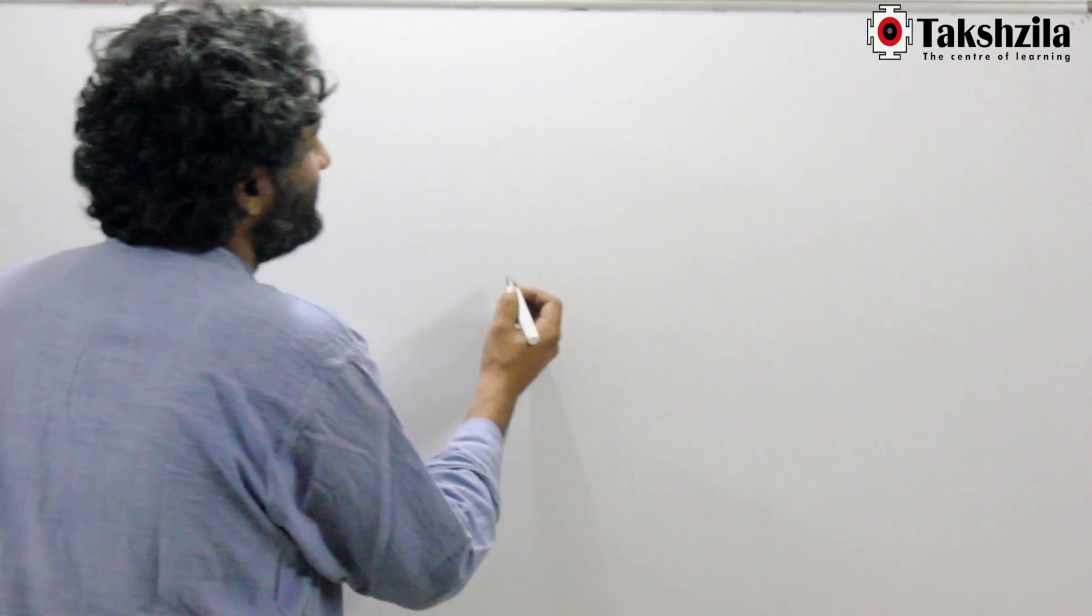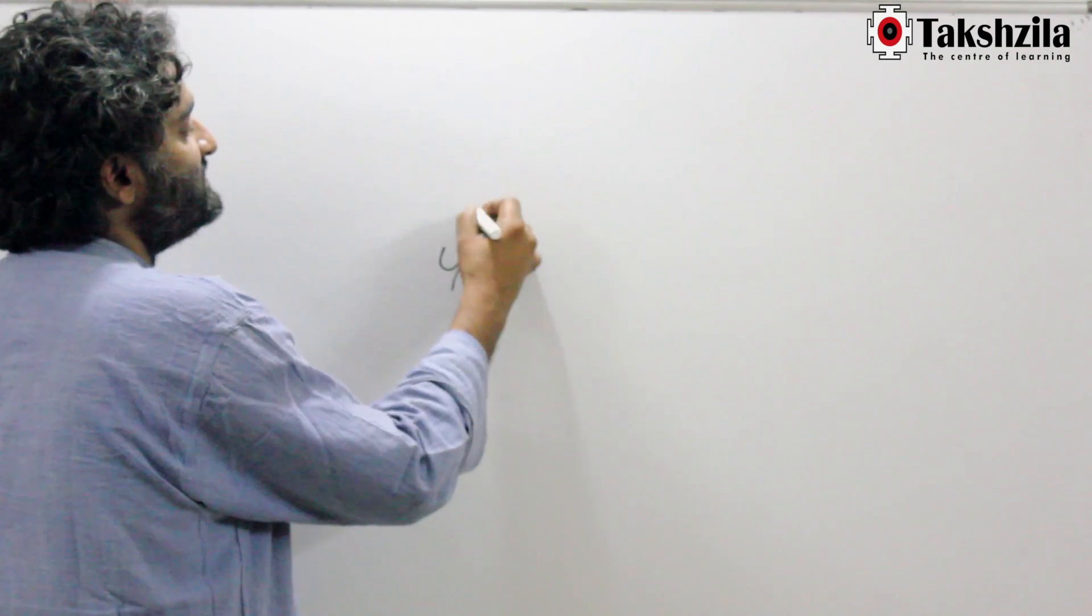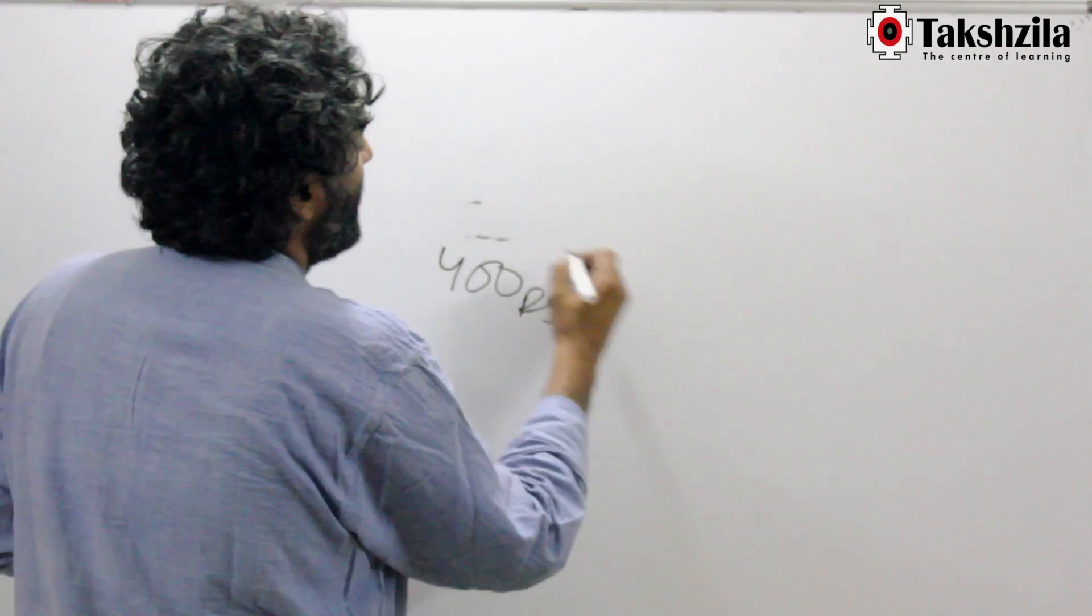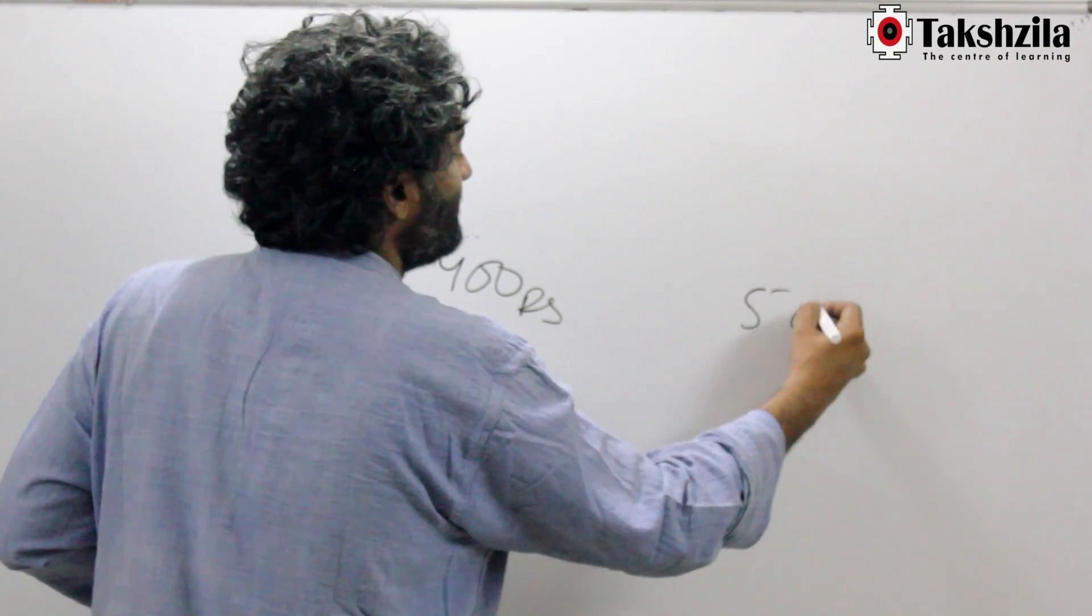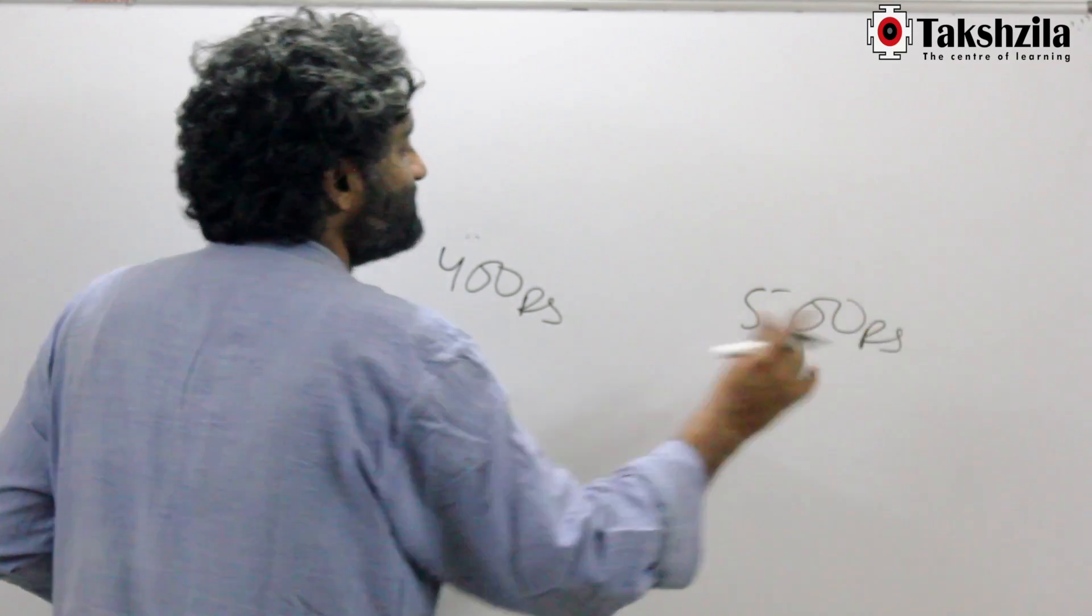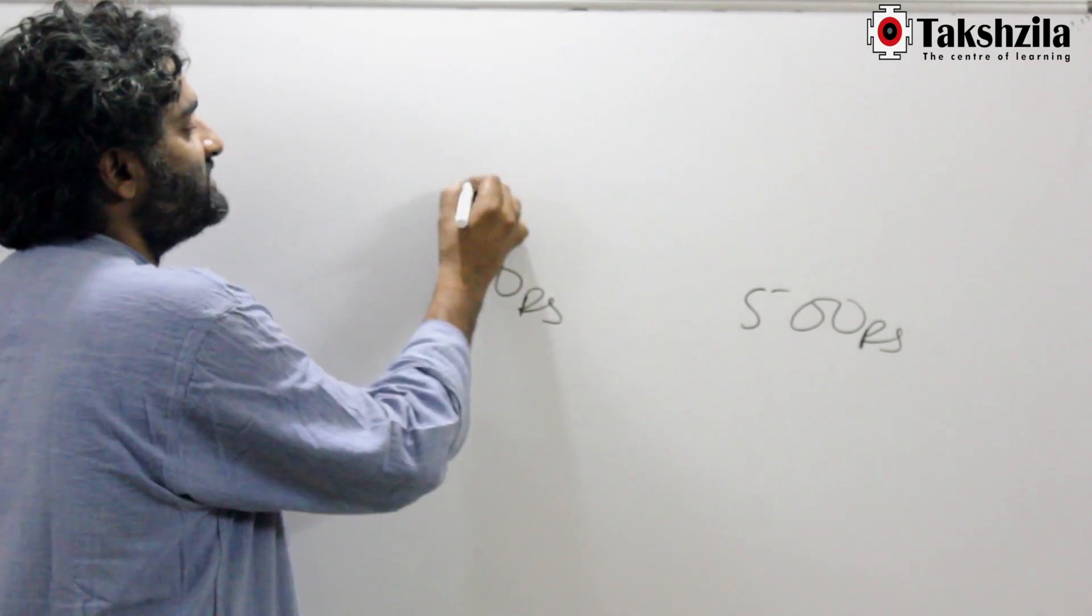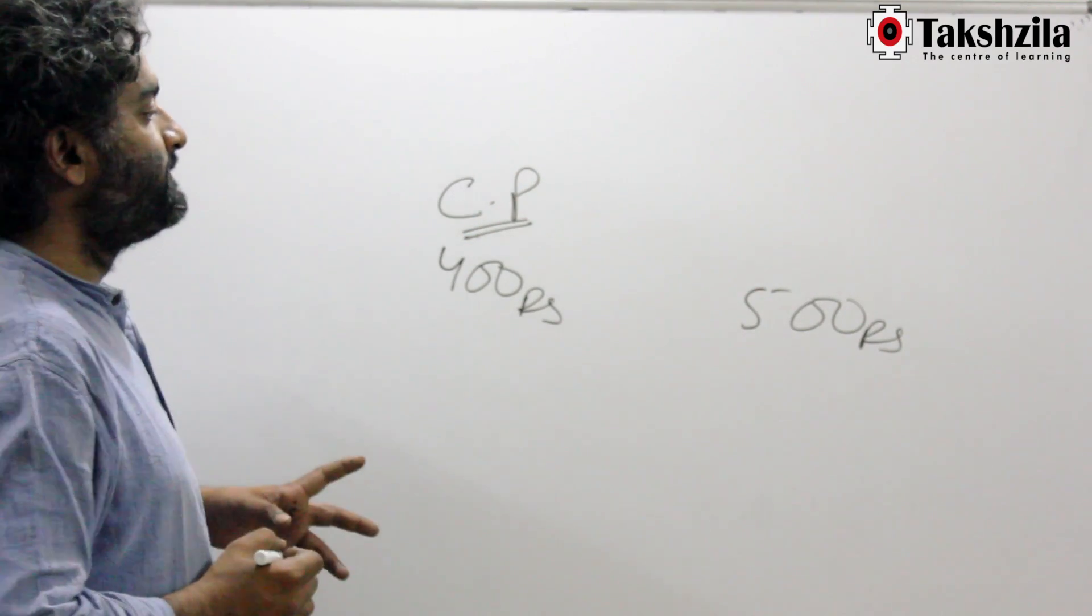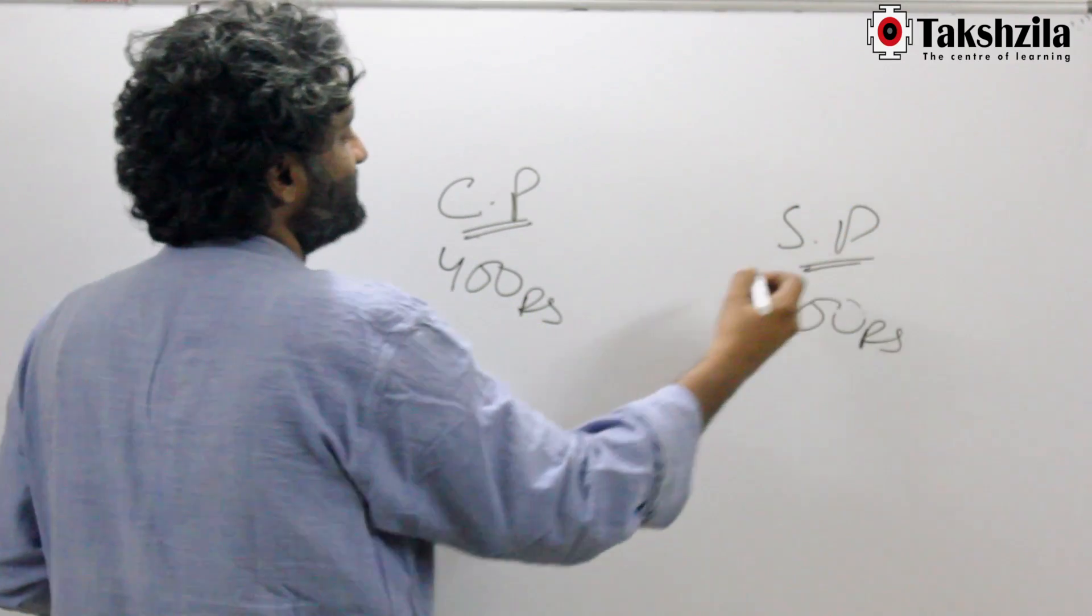Let's take a very simple example. Let's say you buy something for 400 rupees and you sell it at 500 rupees. That's a simple transaction for most people to understand. When you buy it, this buying cost is called the cost price, or the CP. And when you've sold it, this is called the selling price.